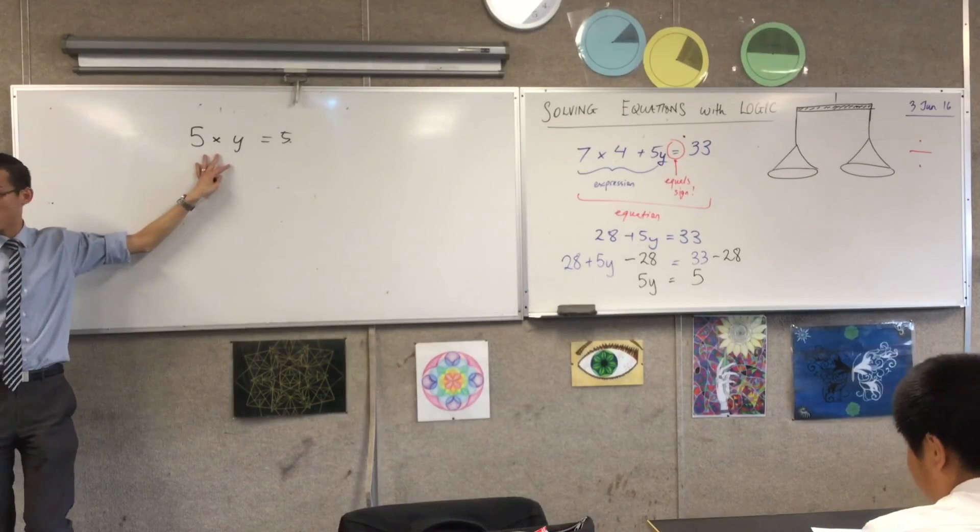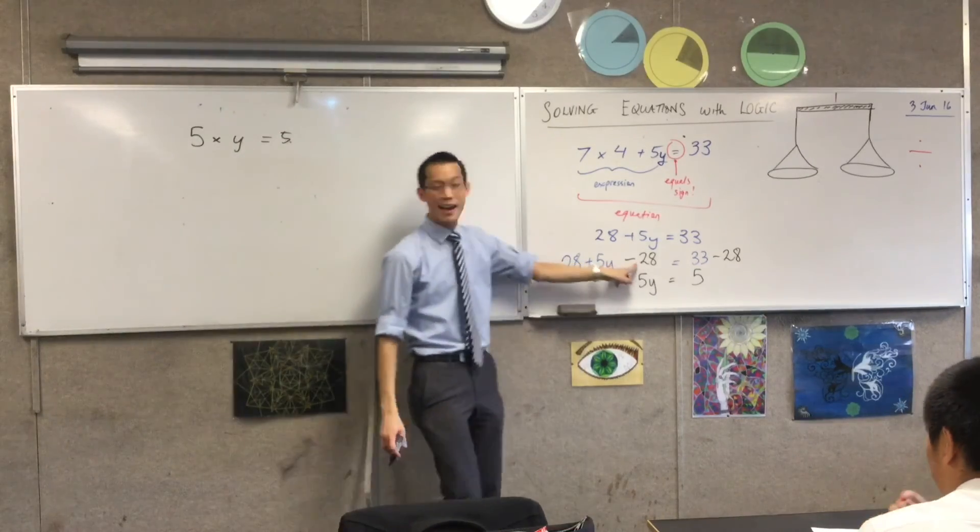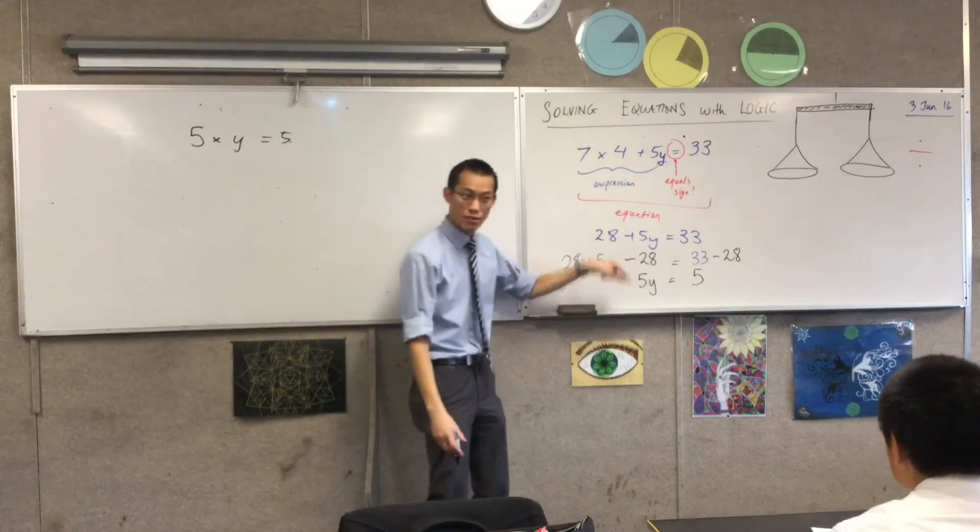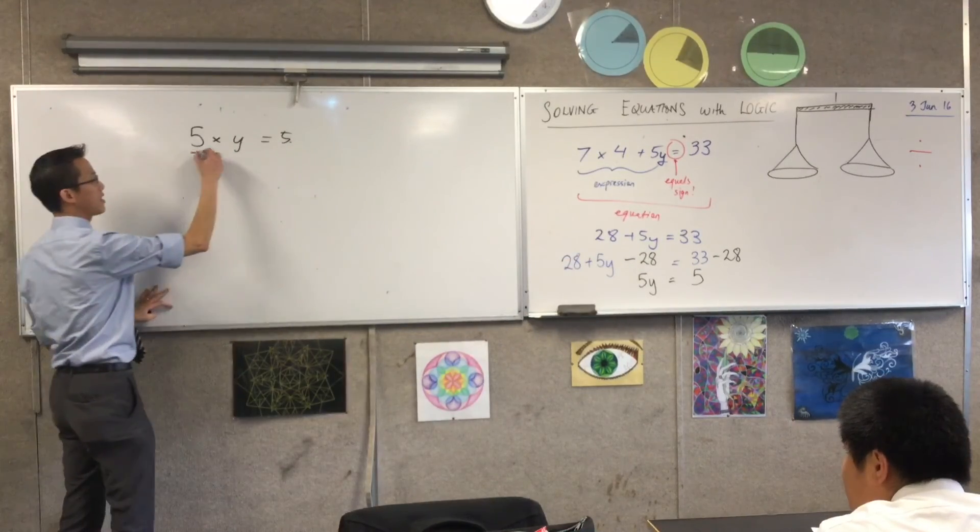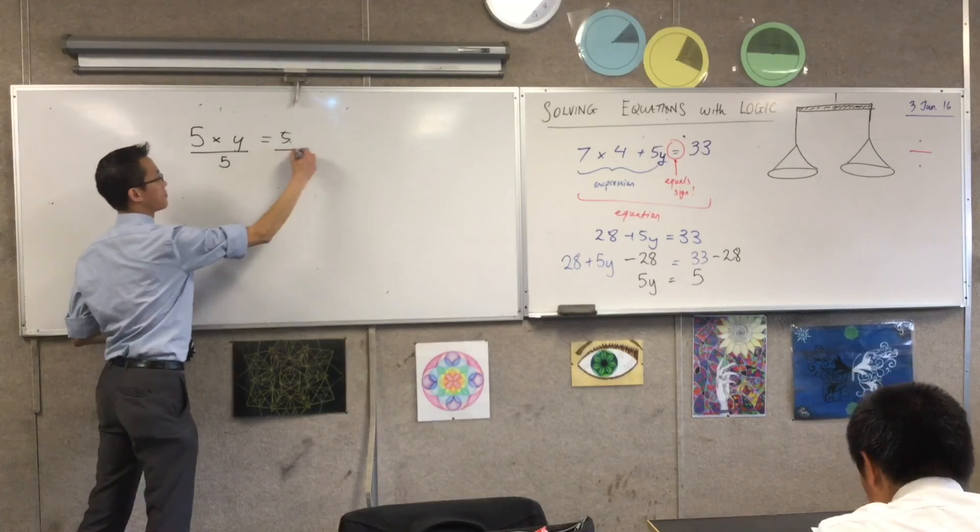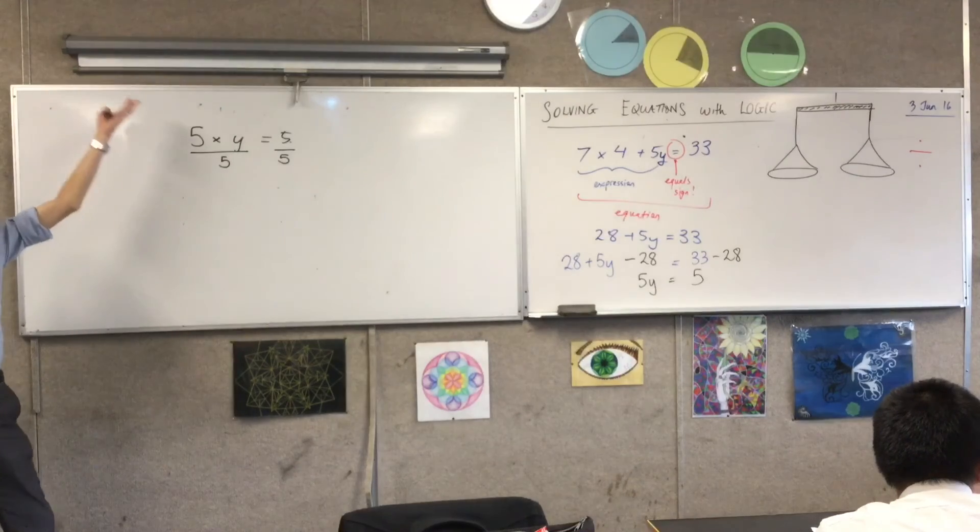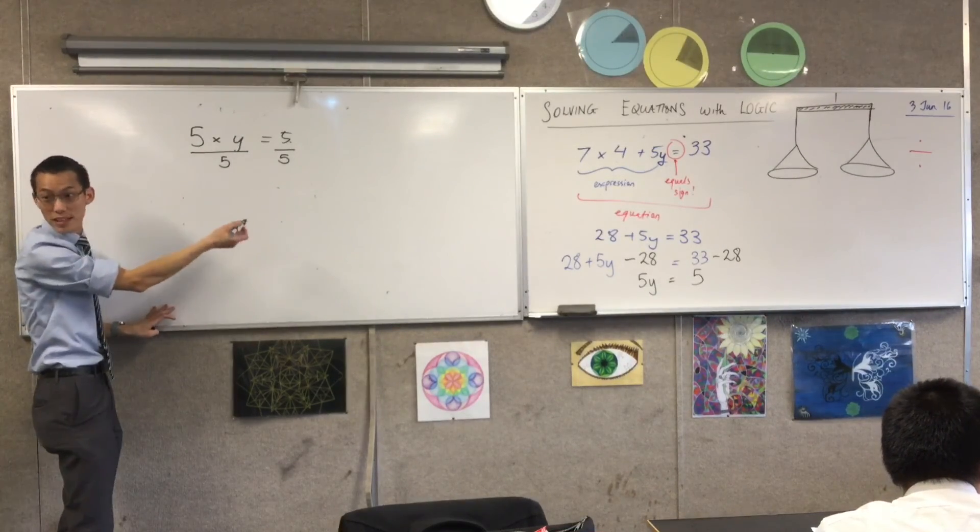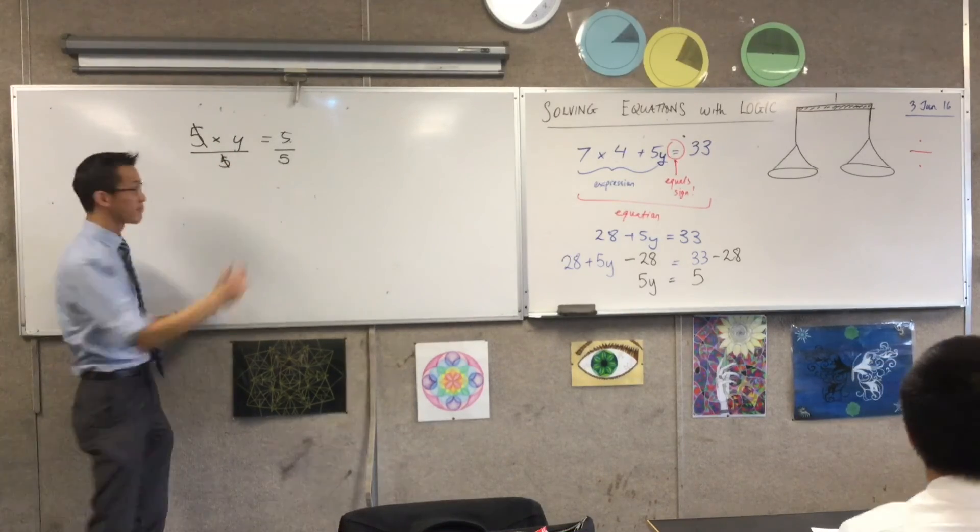So when we write 5y, remember when we learned this abbreviation, it's 5 times y. The reason why subtracting here worked is because you added 28, so I can undo that. Over here, I'm going to divide like this. Can you write that for me? See that? What's happening over here on the left? This is fractions. We've been dealing with this for weeks, right? What happens? You can cancel here, cancel, cancel, leaving you with just y.